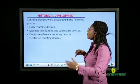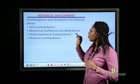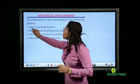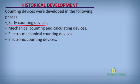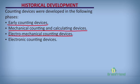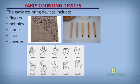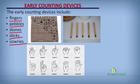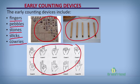Counting devices were developed in various phases. The early counting devices include fingers, pebbles, stones, sticks, and caries. These are the early counting devices.